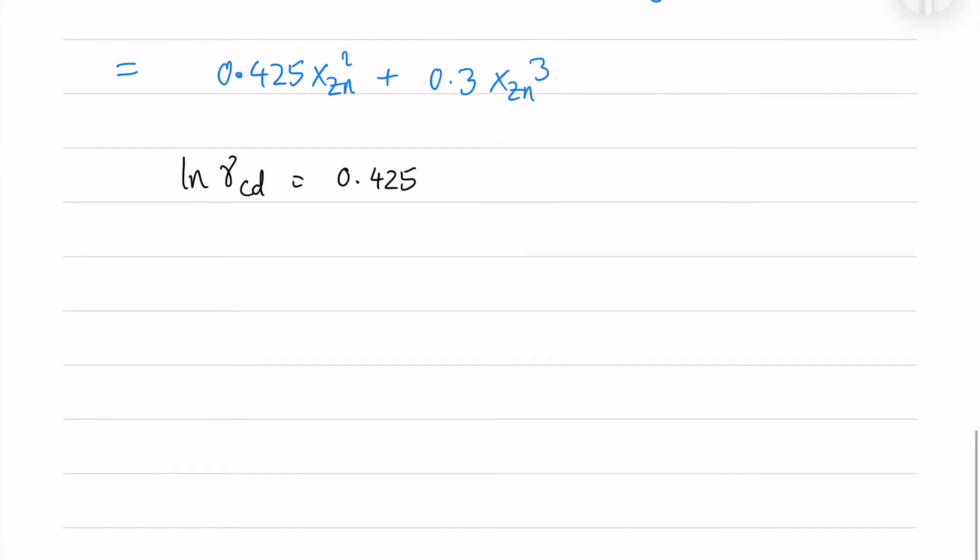I am simplifying the terms and integrating it. We will have xzn square by 2 and xzn cube by 3. After putting the intervals, we are left with 0.425 xzn square plus 0.3 xzn cube. So the ln of activity coefficient of cadmium is this.